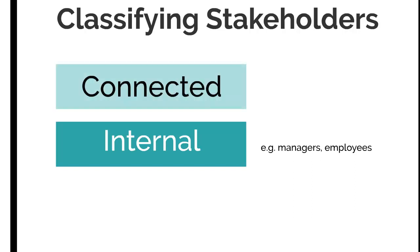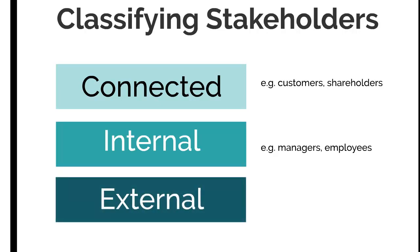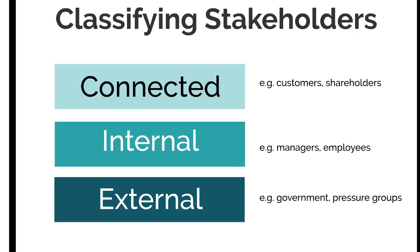Then we have connected stakeholders — these are stakeholders who are outside the business but still closely connected to it, such as customers or shareholders. Then lastly we have external stakeholders — a wider set of stakeholders that sit outside the business and are not closely connected with the company's core offerings, such as government departments or community and pressure groups. So those are our stakeholder classifications.